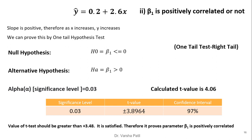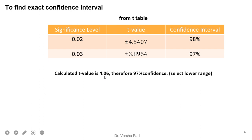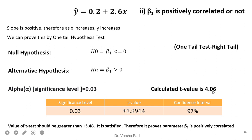Now we will check whether beta 1 is positively correlated or not. For the null hypothesis we keep that beta 1 is less than or equal to 0, and for the alternative hypothesis we keep that beta 1 is greater than 0 — that is a right-tail test. We already checked that at 97% the answer is 3.89. The calculated t value is 4.06. To reject the null hypothesis, our answer should be greater than plus 3.89, and it is satisfying. Therefore, parameter beta 1 is positively correlated.